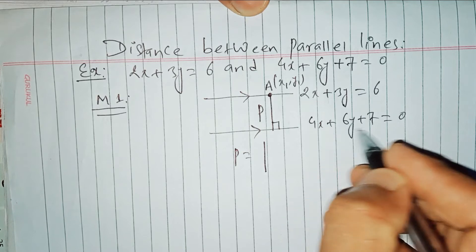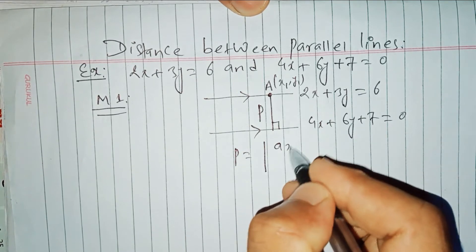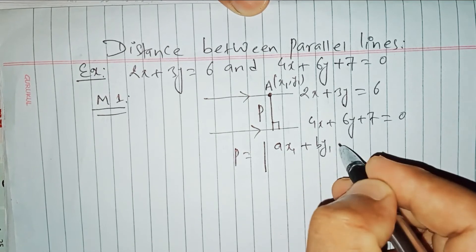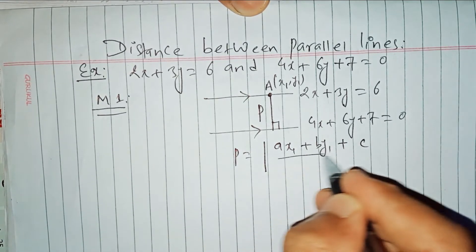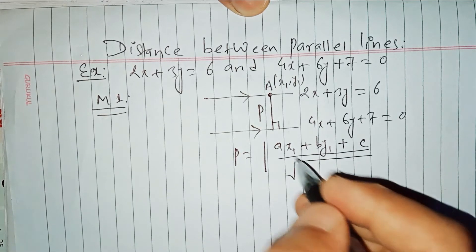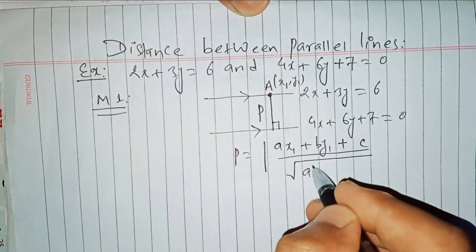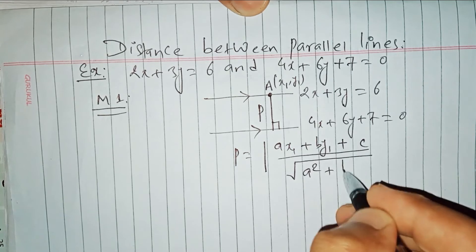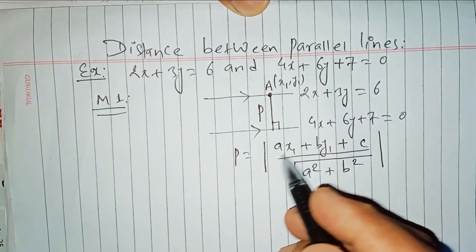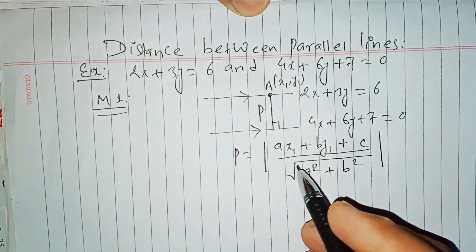The formula for the perpendicular distance from a point to a line is: the absolute value of Ax1 plus By1 plus C, all over the square root of A squared plus B squared.